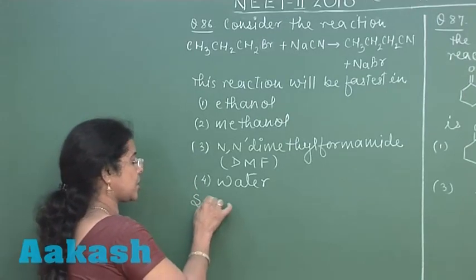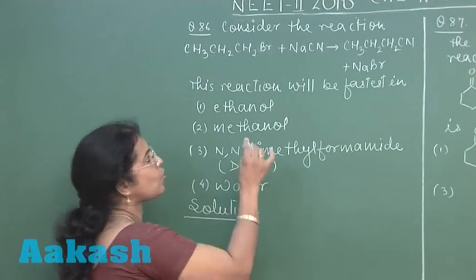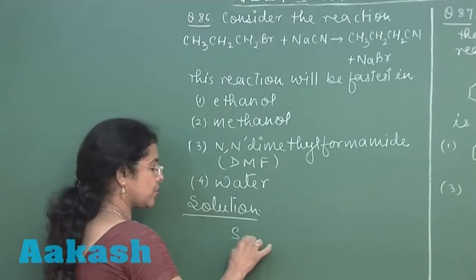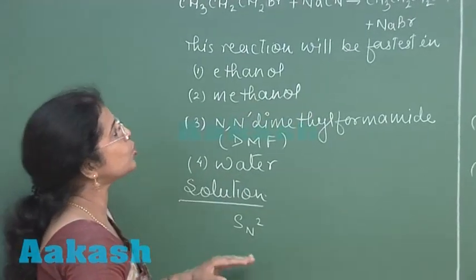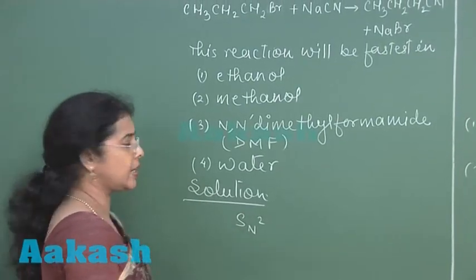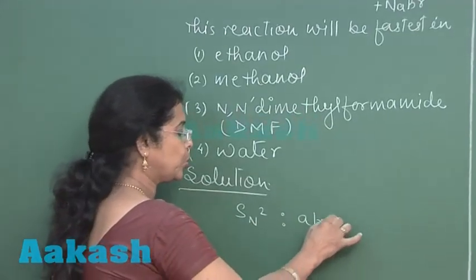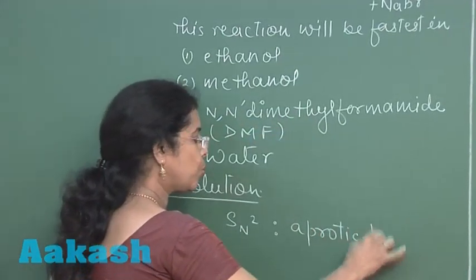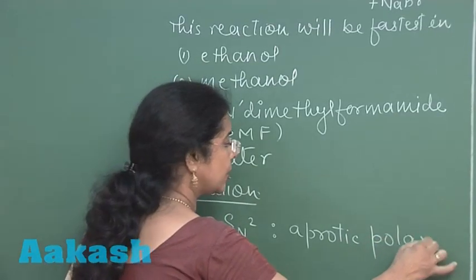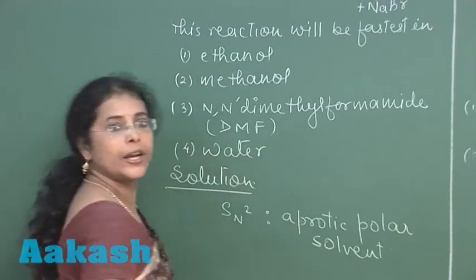Now see in this question reaction takes place via SN2 mechanism. This is nucleophilic substitution of bromine by cyanide ion. Since SN2 reaction is favored by aprotic polar solvent, it means